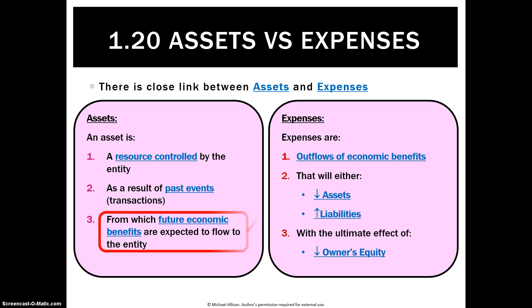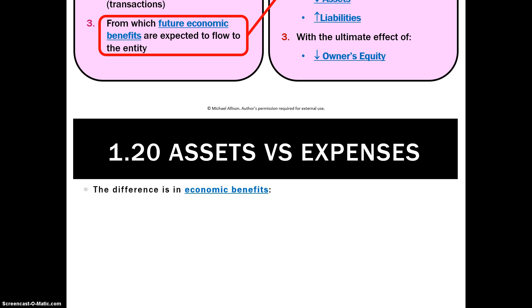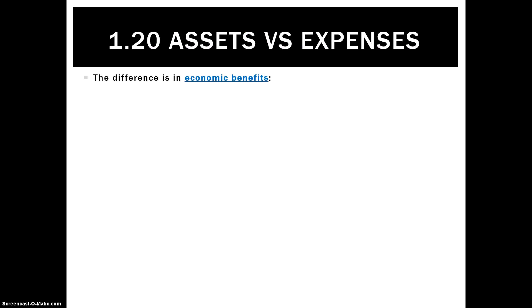The link between the two is all to do with the economic benefits. When the economic benefits of something are in the future — as in they haven't been consumed yet — that's an asset. When the economic benefits have been consumed, it actually becomes an expense. That makes the definition of an outflow of economic benefits.